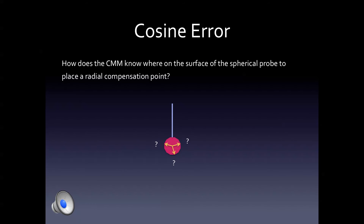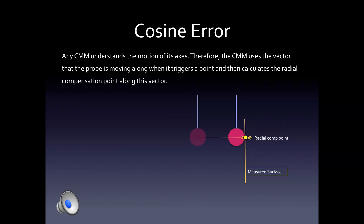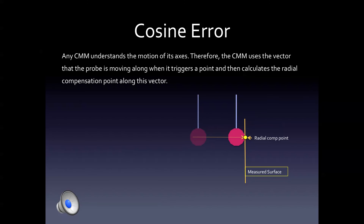So the question that should come to mind is: how does the CMM know where on the surface of the spherical probe to place a radial compensation point? Any CMM understands the motion of its axes and thereby its probe. Therefore, the CMM uses the vector that the probe is moving along when it triggers a point, and then calculates the radial compensation point along this vector.